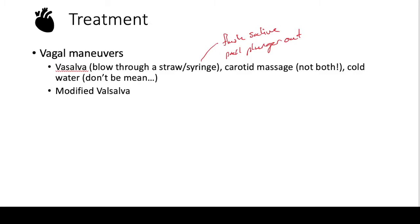For carotid massage, the key thing is you don't want to do it on both carotids, because you'll decrease blood flow to the brain. Also, if someone is a vasculopath with atherosclerosis, you don't want to be massaging those carotids too hard — or at all — because you risk creating a thrombus by breaking off atherosclerosis, which could go to the brain and cause a stroke. As for cold water, it's mainly used in kids, but in adults it's almost never used. If you throw cold water on a patient, they'll be upset, the nurses will be upset, and you'll have to clean it up. It's probably not going to work, so don't bother.